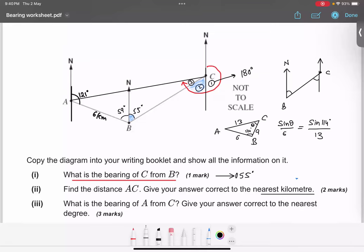Quickly use and solve and tell me the answer. We will be able to get sin inverse 6 multiplied by sin 114 divided by 13. What is the answer we are getting? It is 25.6 degrees. Over here also they are asking correct to nearest degree. That means we have to round off. So it will become 26 degrees. So I got the third angle as 26 degrees.